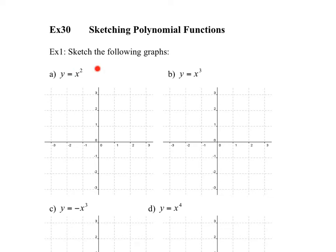A polynomial function we already know is y equals x squared — that's the parabola you know fairly well. Notice that at zero, zero, it goes back in the other direction. We say that x has a multiplicity of 2 because it's x times x. A multiplicity of 3 would be x times x times x.